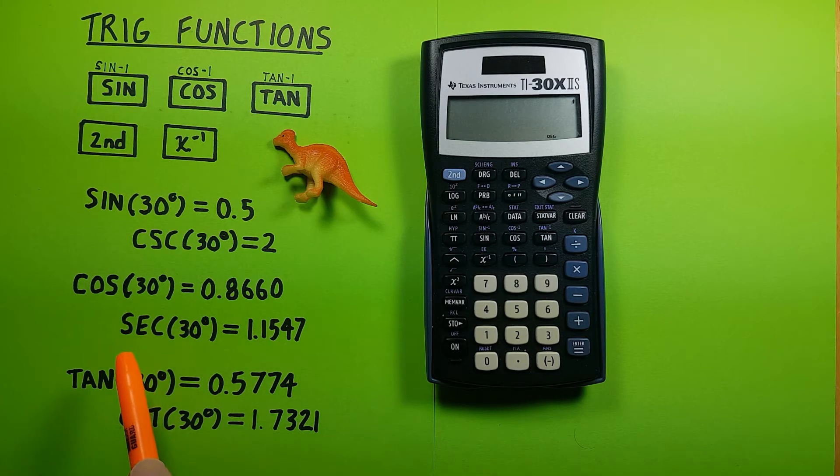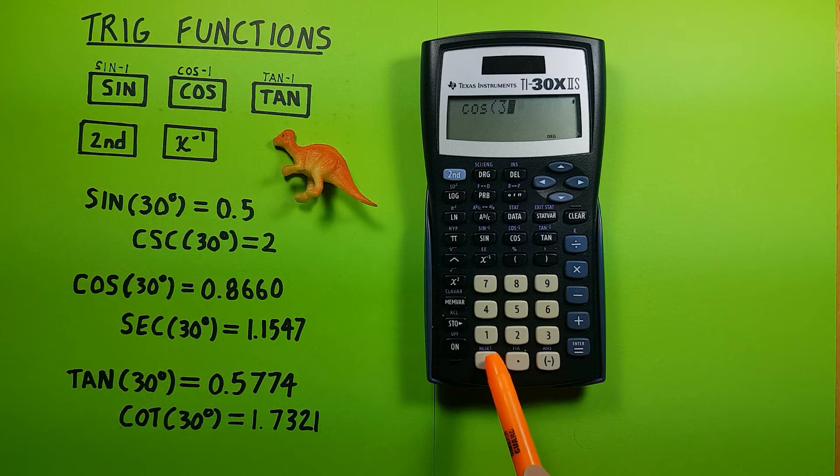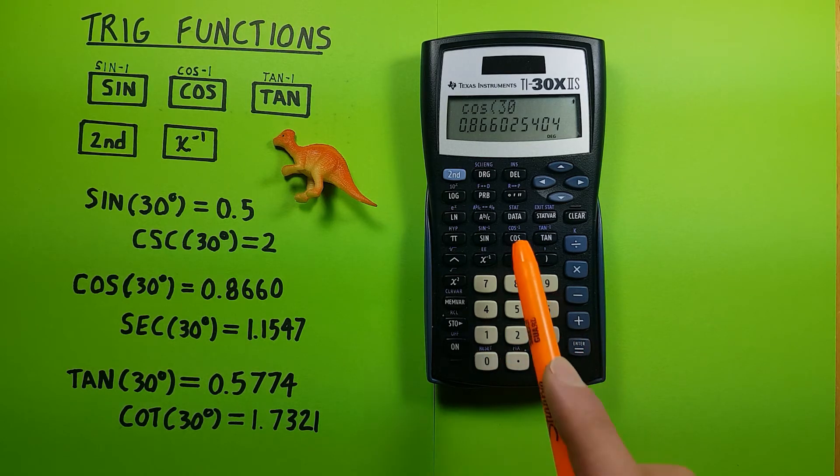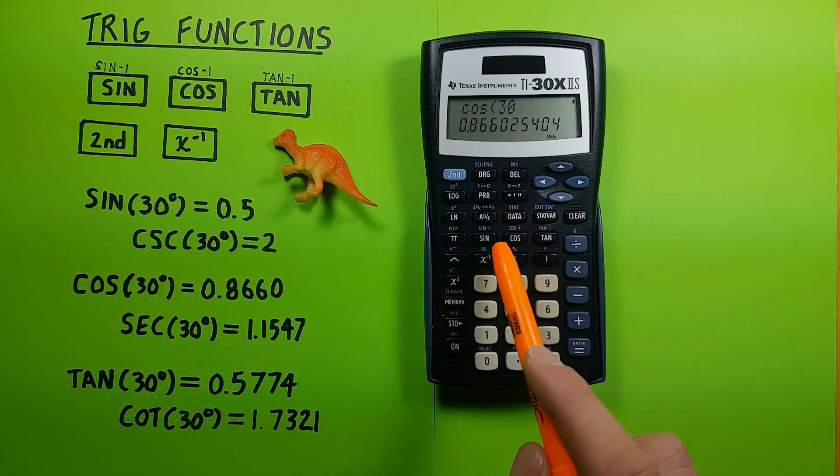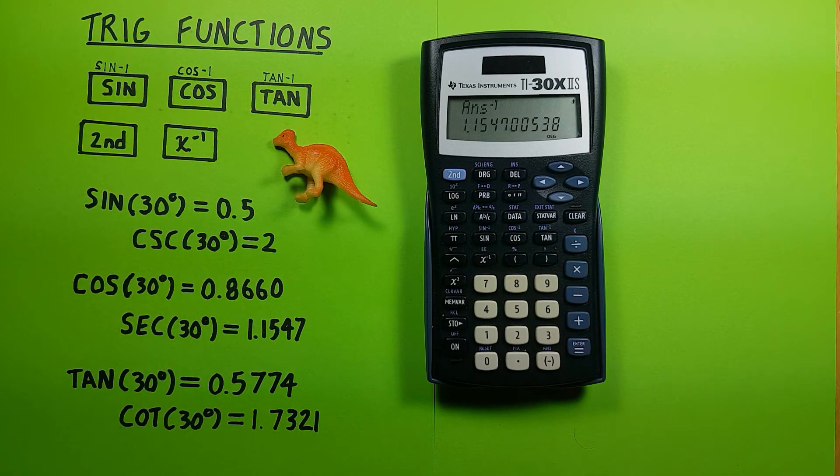For secant, we do the same with cosine of 30 equals 0.8660, and then inverse that to get a secant of 30 degrees equal to 1.1547.